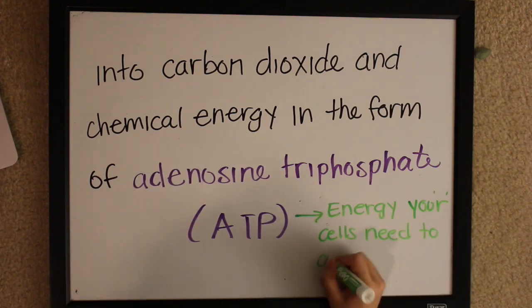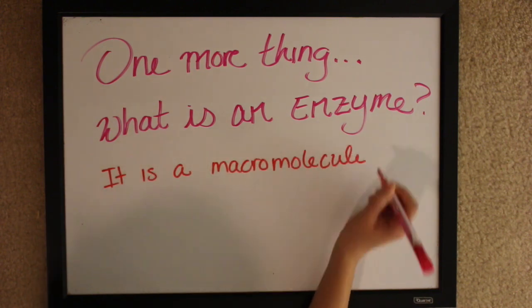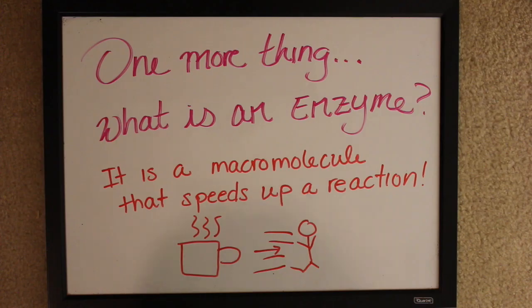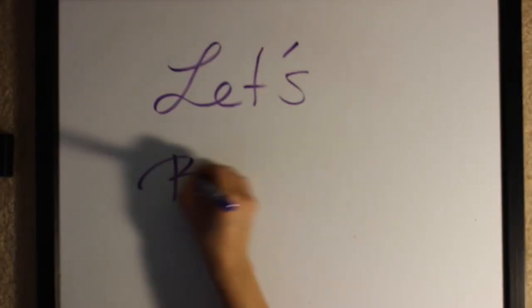One more thing, what is an enzyme? It is a macromolecule that speeds up a reaction, kind of like coffee speeds us up in the morning. So let's begin. There are eight steps in the citric acid cycle.